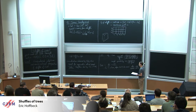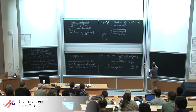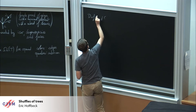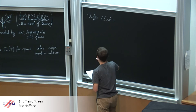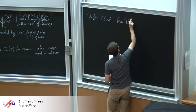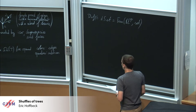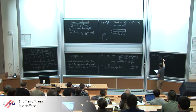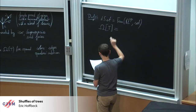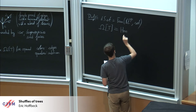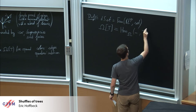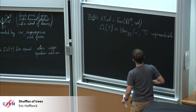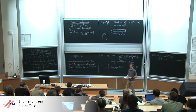Let's continue with definitions. Now we can define dendroidal sets. You just replace delta by omega. So pre-sheaves: functor omega-op to sets. Let's also give a notation — be careful, this is with parentheses, this is with brackets. So we take the morphisms in omega from something to T — the representable. We will need it in some further definitions. This is our dendroidal set, introduced as I said by Ittay Weiss.